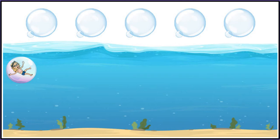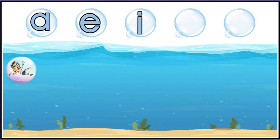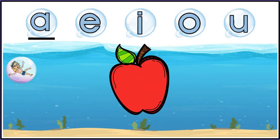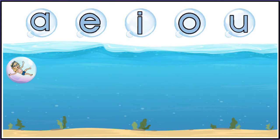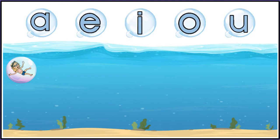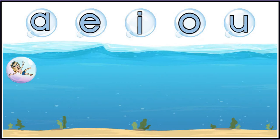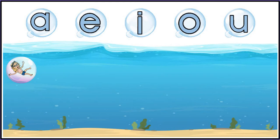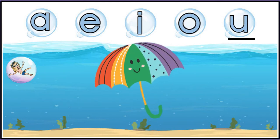Can you remember them? Say them with me. A, E, I, O, U. A as in apple. E as in elephant. I as in insect. O as in orange. U as in umbrella.